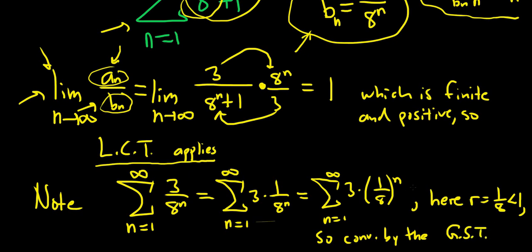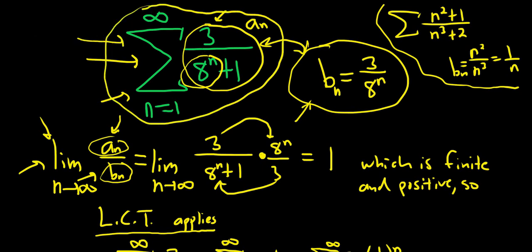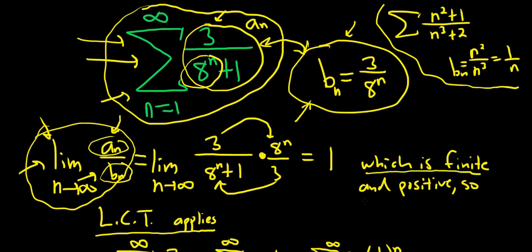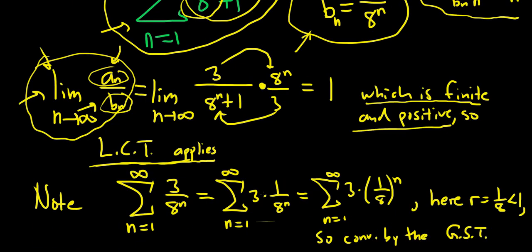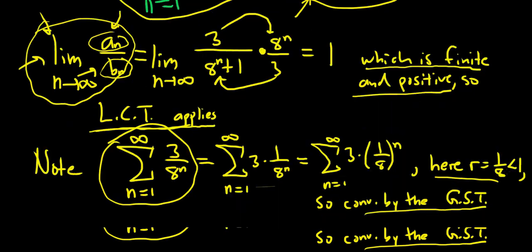Let's recap from the very beginning, because there are a lot of steps and the logic is really important. We have this infinite sum and we're asked to determine if it converges or diverges using the limit comparison test. Step one: find b sub n by looking at the leading terms. Then take the limit of a sub n over b sub n — we get a positive finite number, so LCT applies. That says the sum of the a's behaves the same as the sum of the b's. We look at the sum of the b's and determine it's a convergent geometric series. Therefore the sum of the a's — our original series — will also converge by the limit comparison test.